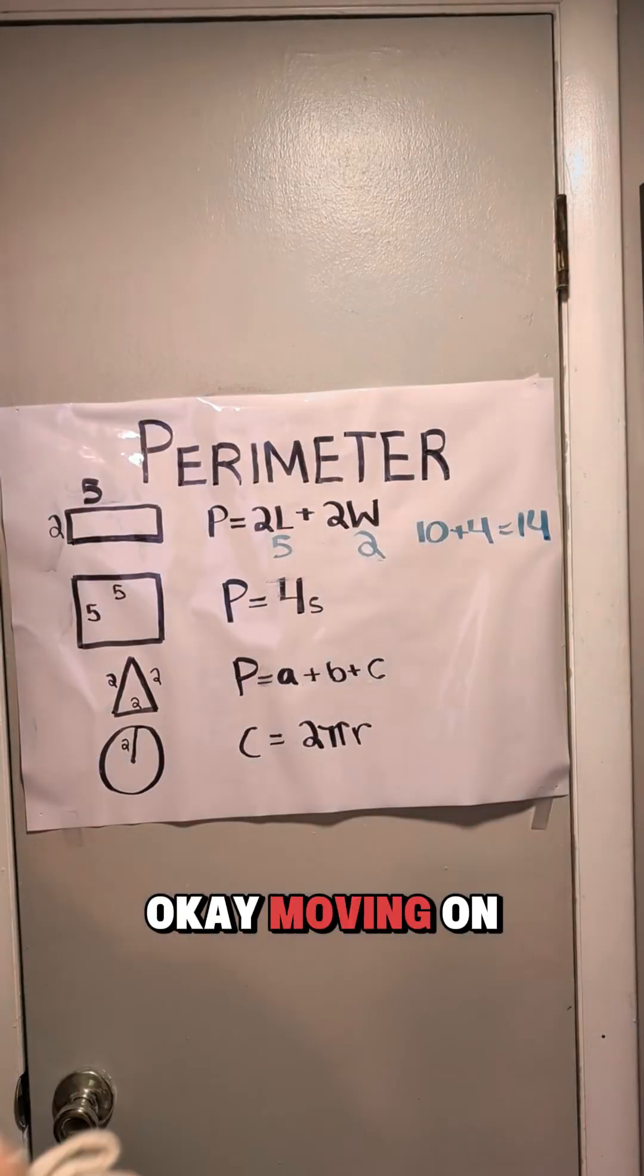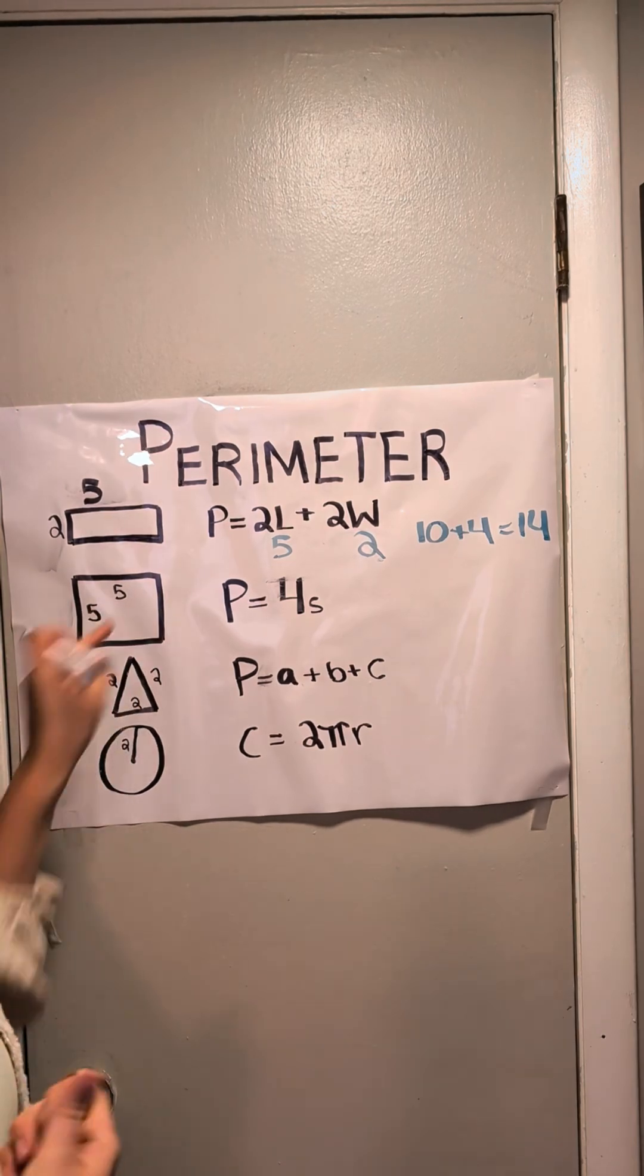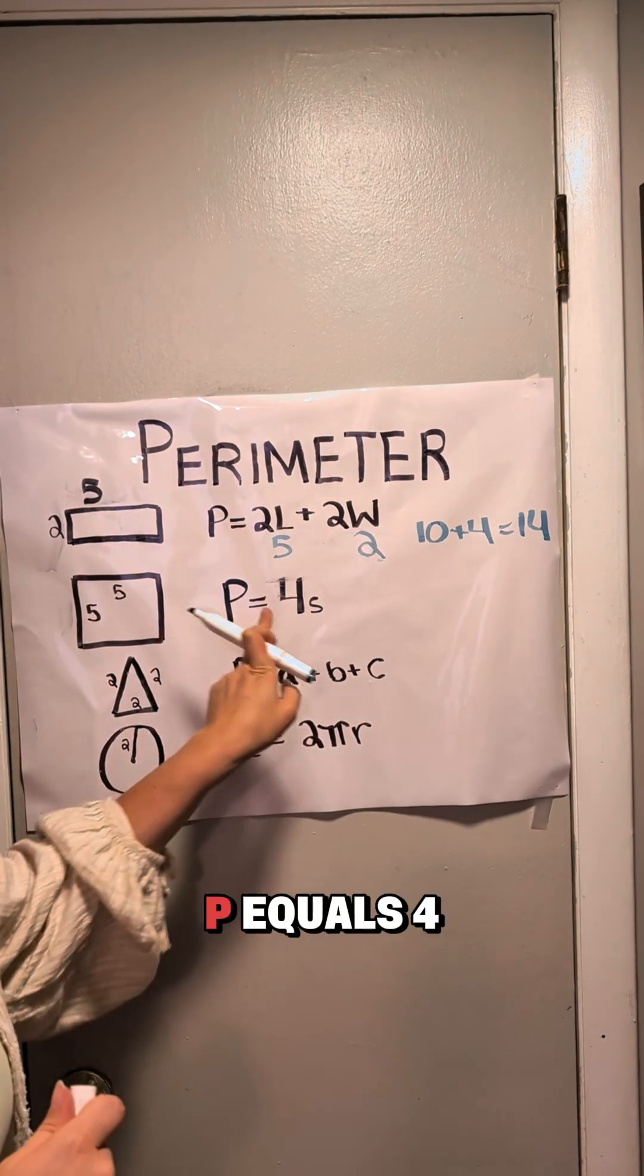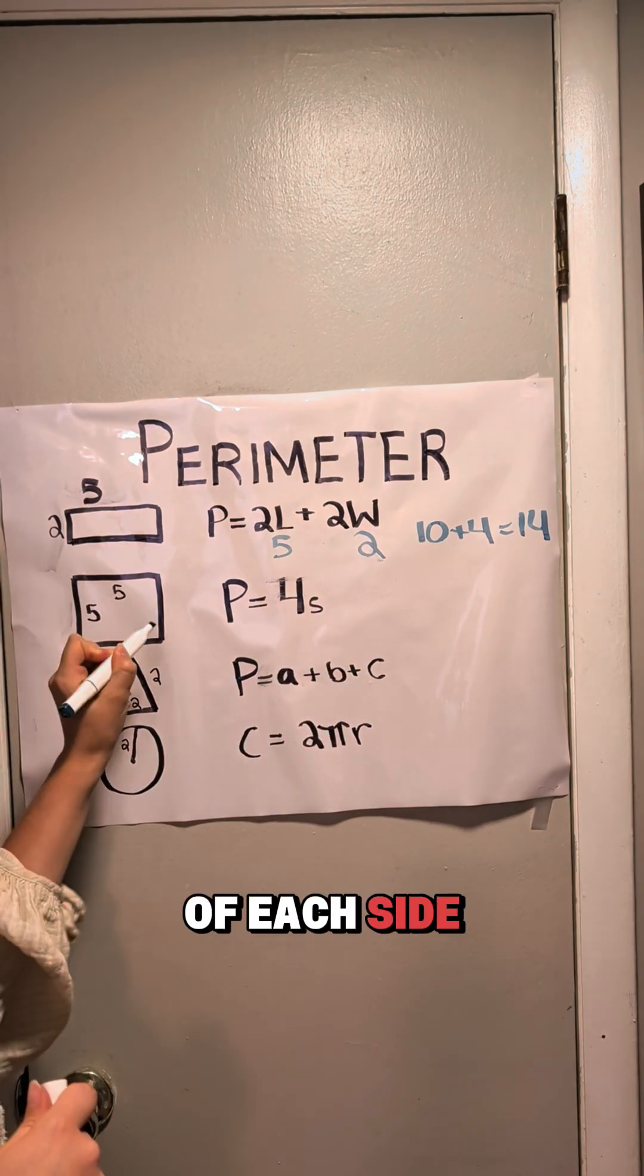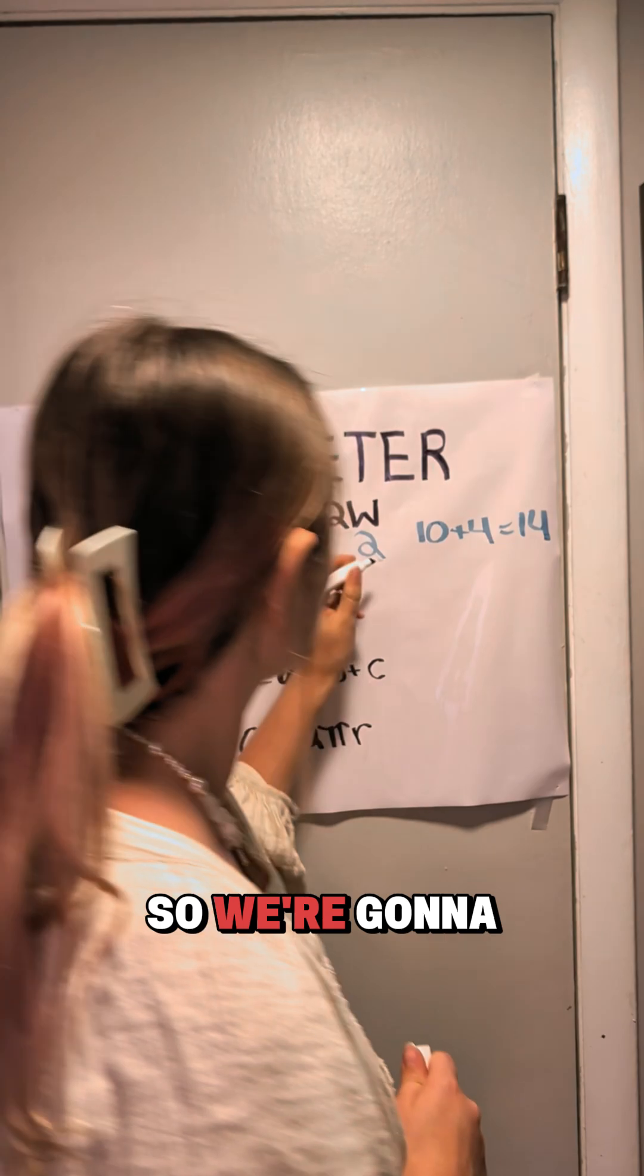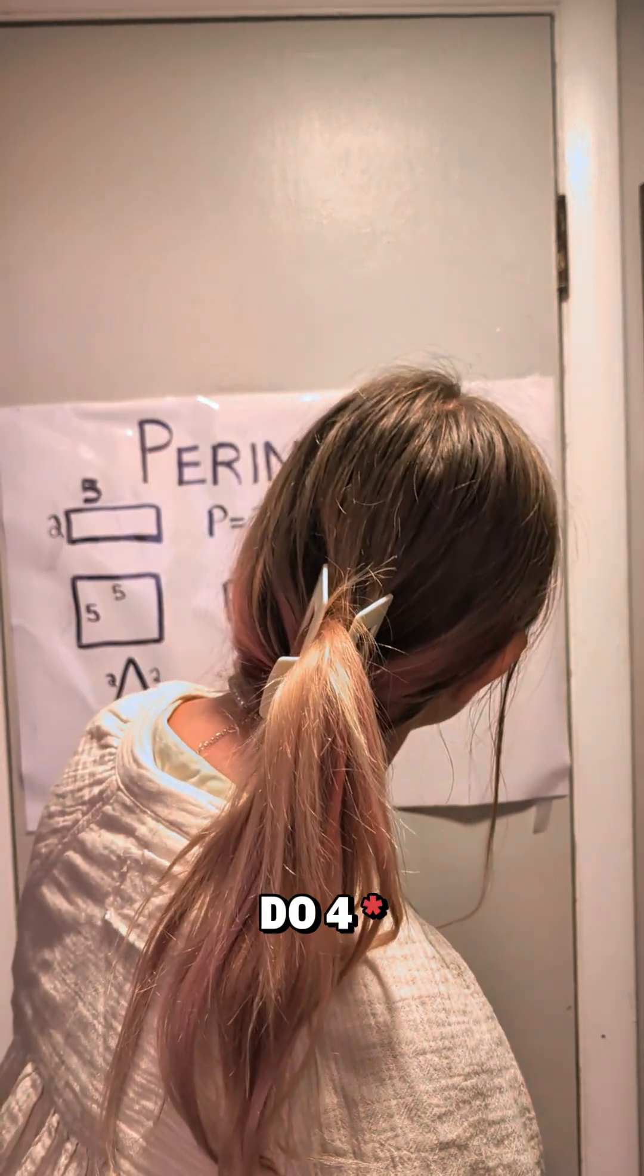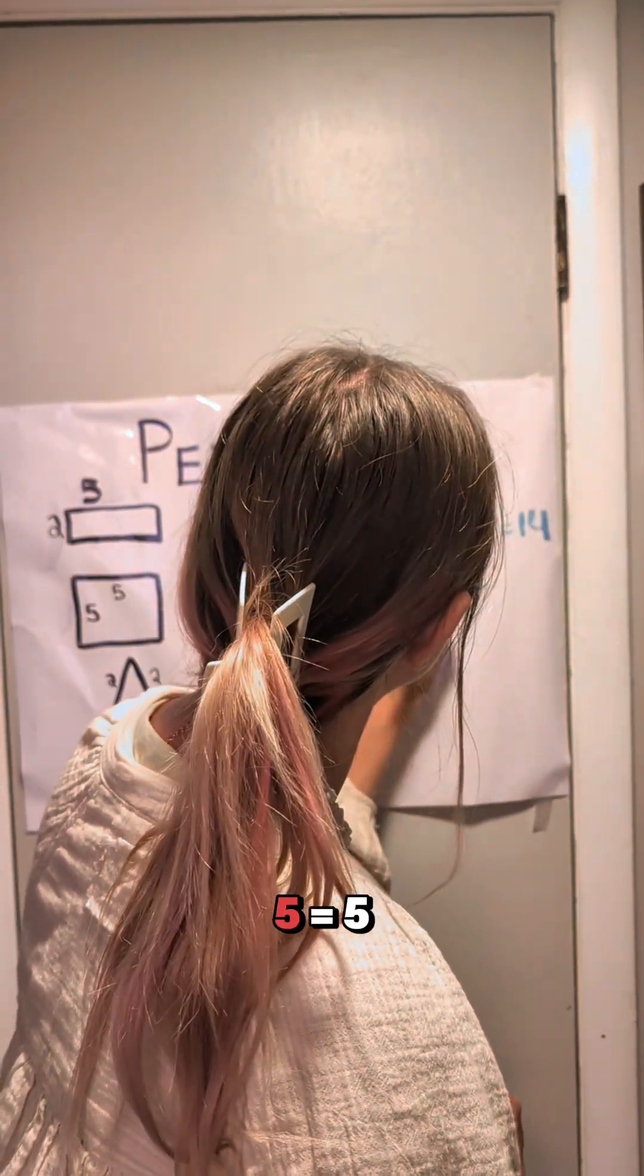Okay, moving on to a square. The formula is P equals 4S. So the length of each side of this square is 5. So we're going to do 4 times 5 equals 20.